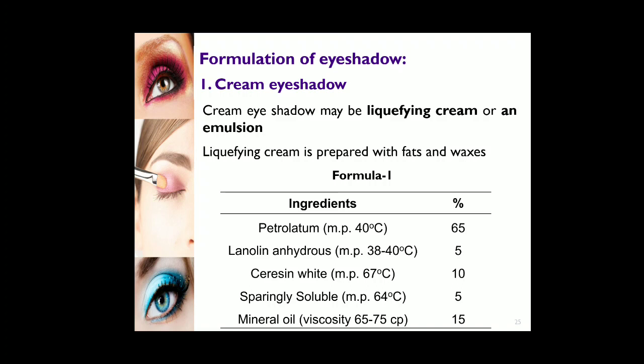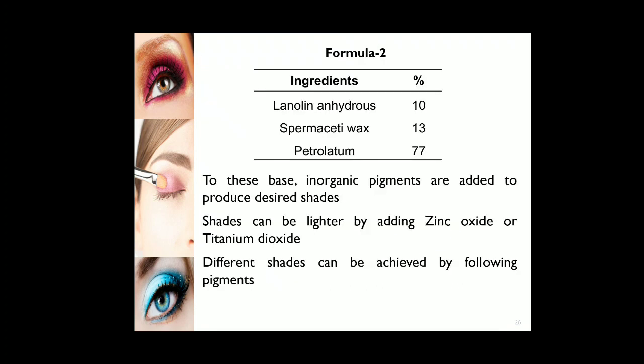Suitable sparingly used ingredients, white kerosene, and mineral oils can be used to maintain viscosity. Spermaceti wax can also be used to give stiffness to the eye shadow. These ingredients are mixed with color pigments to give the coloring effect.